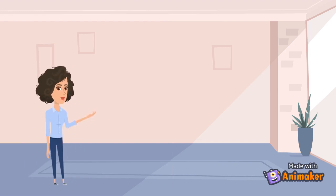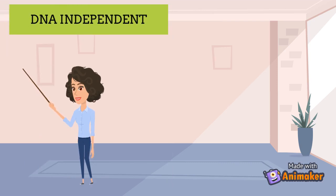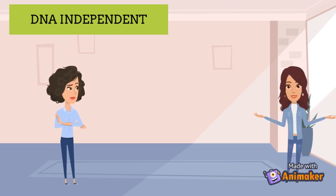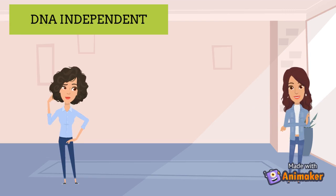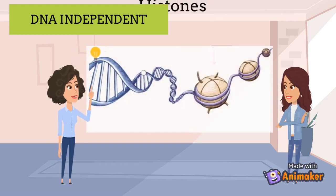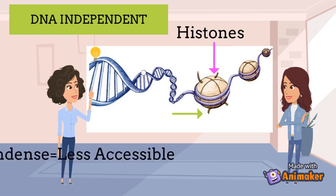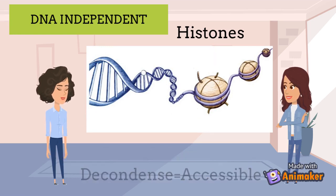So that was it for DNA-dependent, but now let's discuss DNA-independent regulation. As the name indicates, this type of regulation does not depend on the DNA itself, but on the other proteins and molecules associated to it. Histones are proteins associated with the DNA and help package it. They have finger-like projections to which molecules can be attached, and that will either trigger the chromatin to condense or decondense. DNA-independent regulation includes acetylation and methylation of histone proteins.